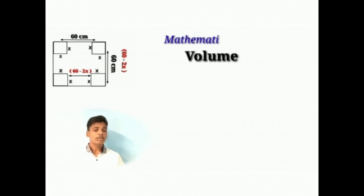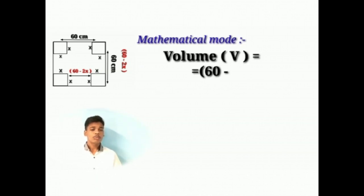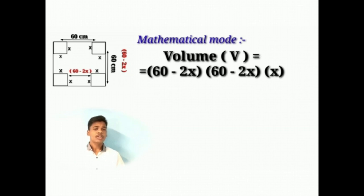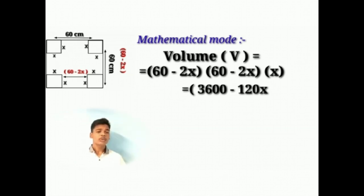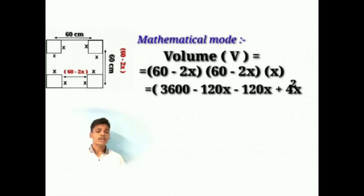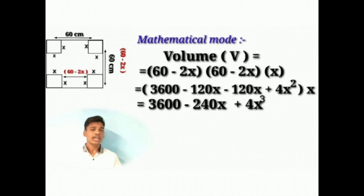Therefore the mathematical model will be volume V is equal to 60 minus 2x into 60 minus 2x into x. After solving it we will get 3600 minus 120x minus 120x plus 4x squared into x. So after solving this we will get 3600x minus 240x squared plus 4x cubed.